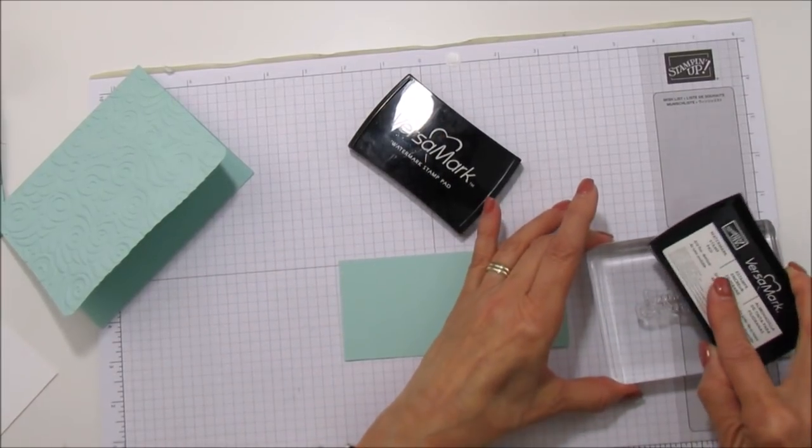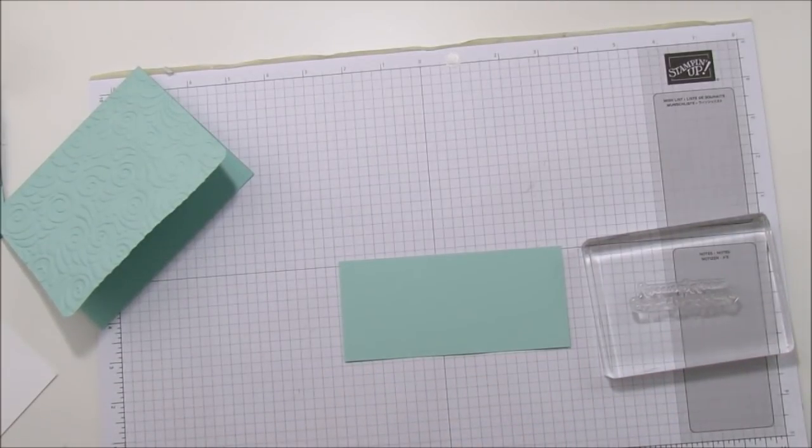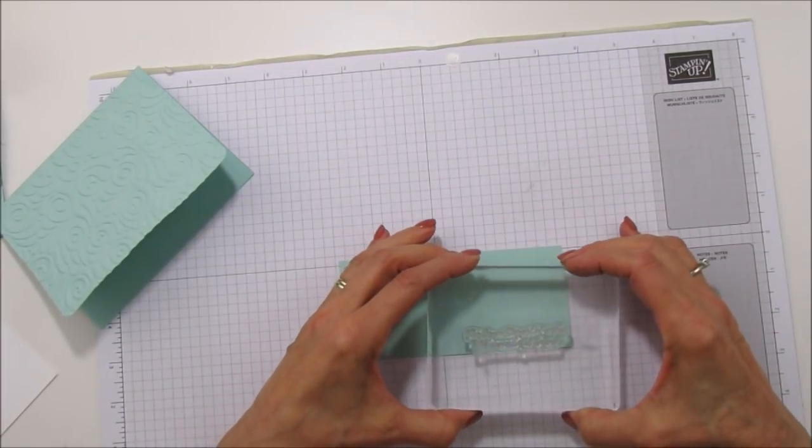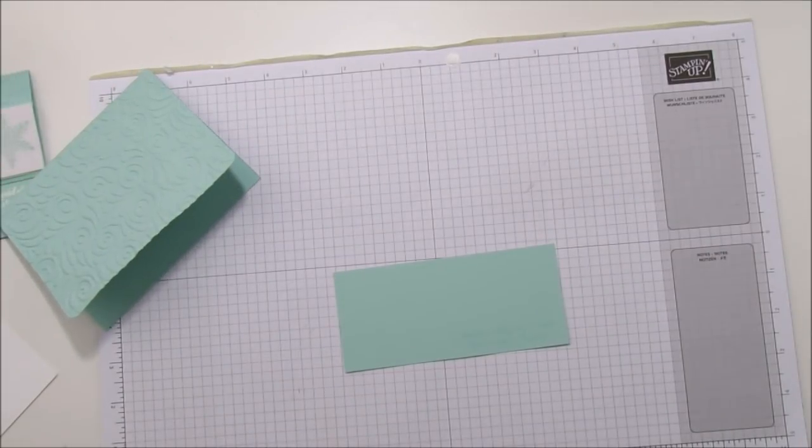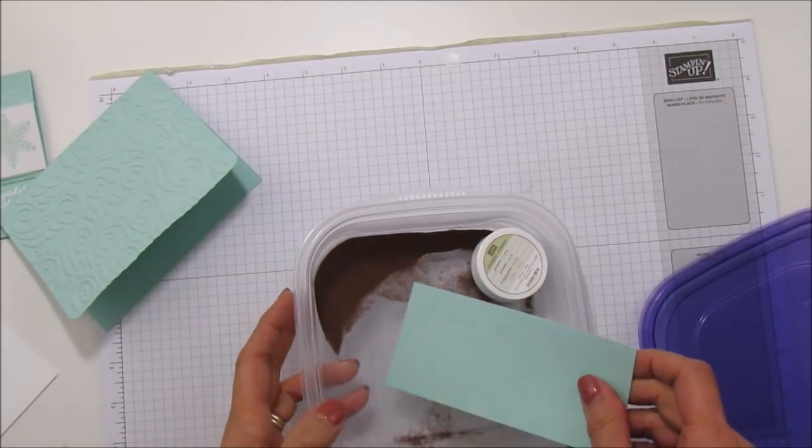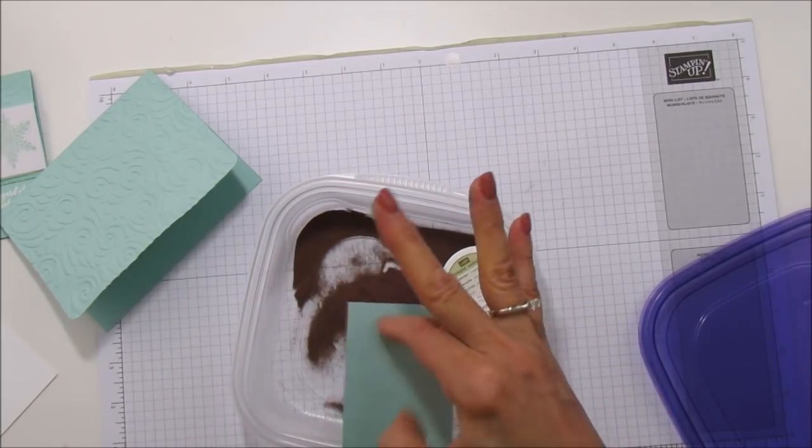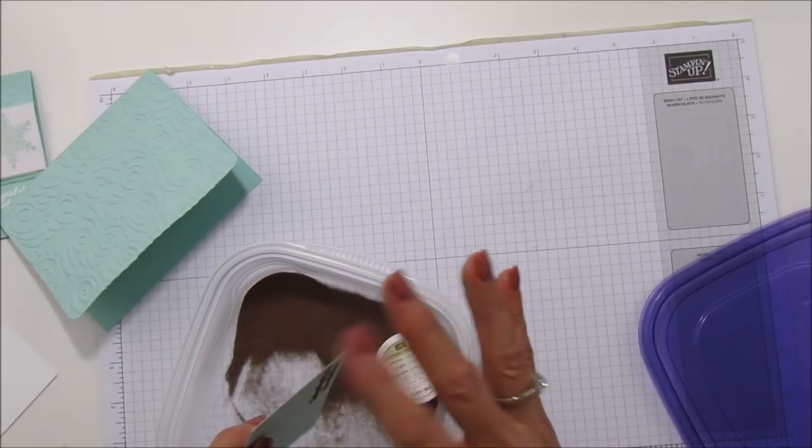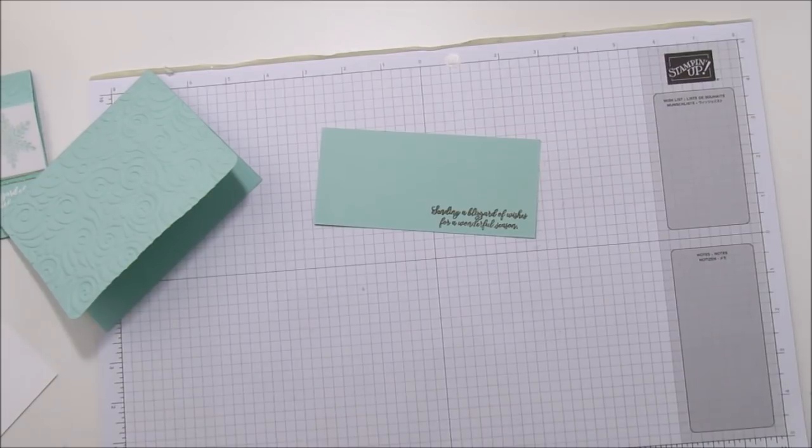I'm going to get the Versamark out. We're going to ink it up with the Versamark and we're going to do it on the very bottom edge here. Stamp it and I'm going to grab the Copper Embossing Powder. This is the one I don't have a spoon in it so I'm going to just dip it in here. Make sure you got it really well coated. Okay and then we are ready to emboss so I'm going to grab my heat tool.